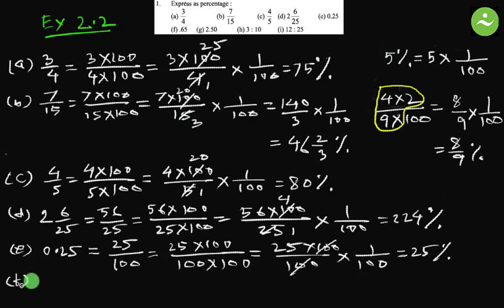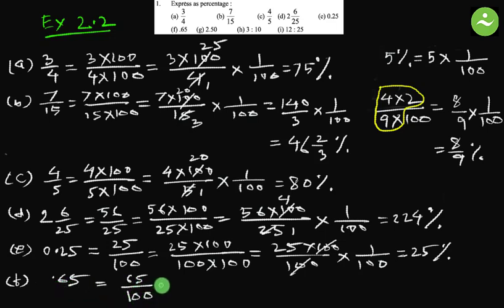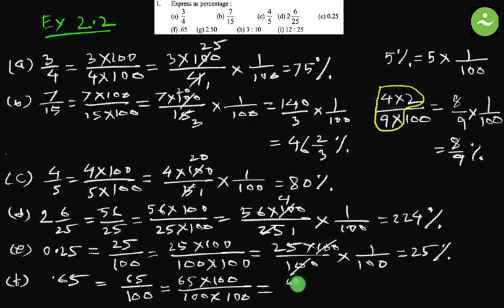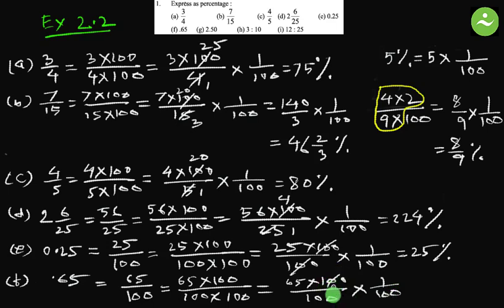Part f: 0.65. Similarly, 0.65 equals 65 by 100 — for each decimal digit we add a zero in the denominator. Now multiply both by 100: 65 multiplied by 100, divided by 100, multiplied by 100. Separate 1 by 100: 65 multiplied by 100 over 100, multiplied by 1 by 100. Simplify: the 100s cancel, leaving 65. The answer equals 65 percent.